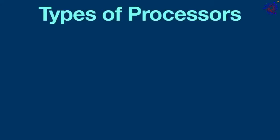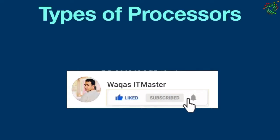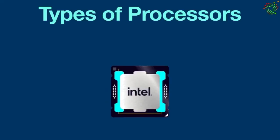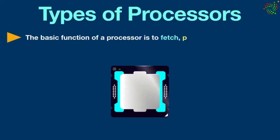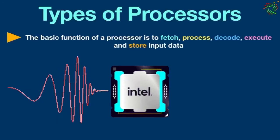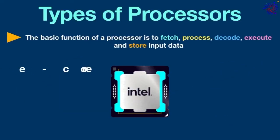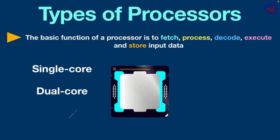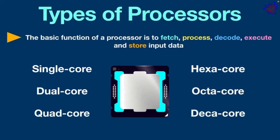Hello everyone, welcome back to another video. Today we are going to talk about the types of processors. As you know, a processor is the main part of a computer, also known as the brain of a computer. The basic function of a processor is to fetch, process, decode, execute, and store input data. The major types of processors include single core, dual core, quad core, hexa core, octa core, and deca core.